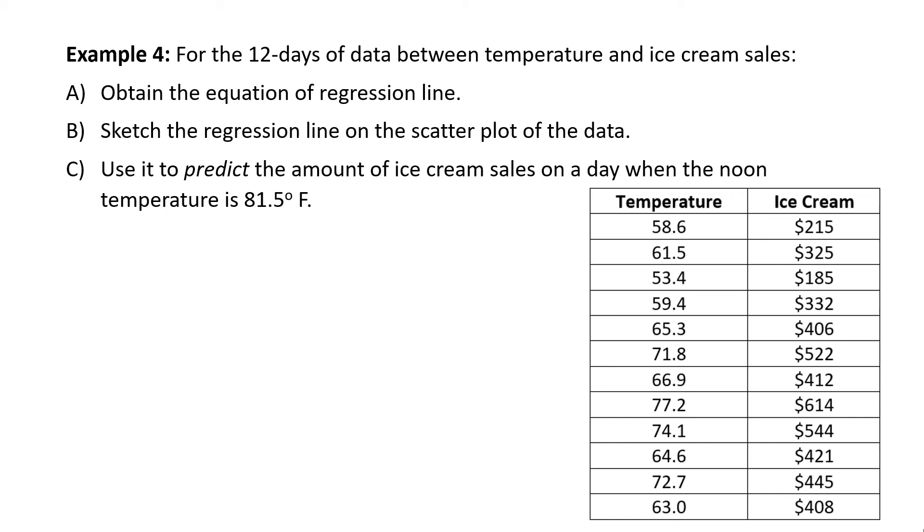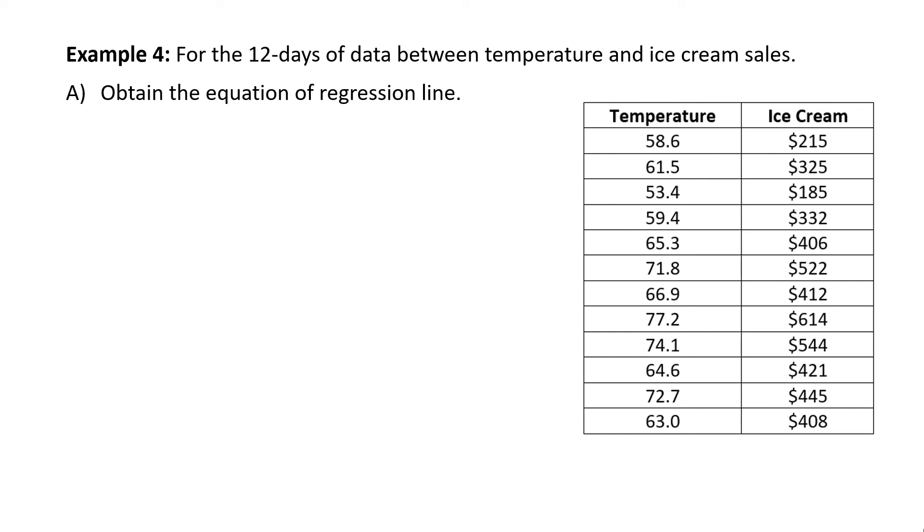For the 12 days of data between the temperature and ice cream sales, A: obtain the equation of regression line, B: sketch the regression line on the scatter plot of the data, and C: use it to predict the amount of ice cream sales on a noon day when the noon temperature is 81.5 degrees Fahrenheit. Part A. Obtain the equation of the regression line. That means we want y equals mx plus b where m is the slope and b is the y-intercept.